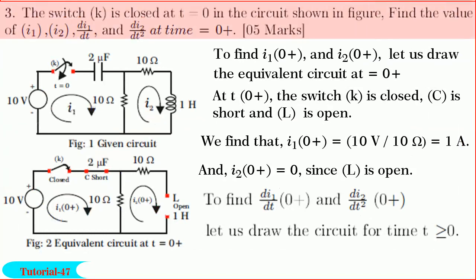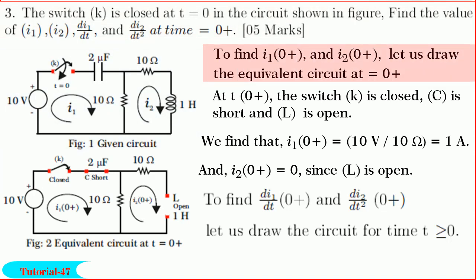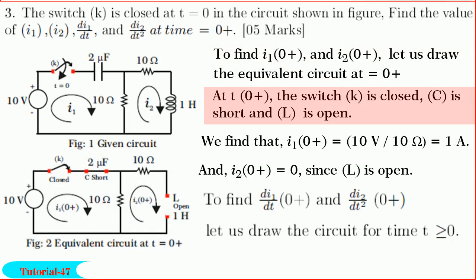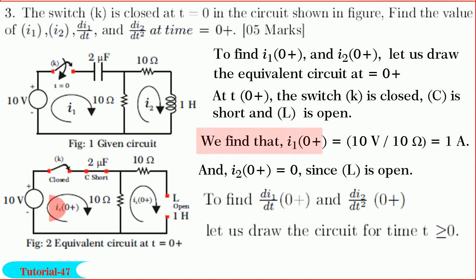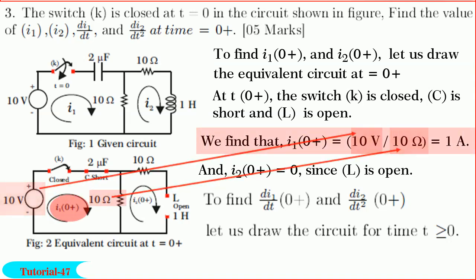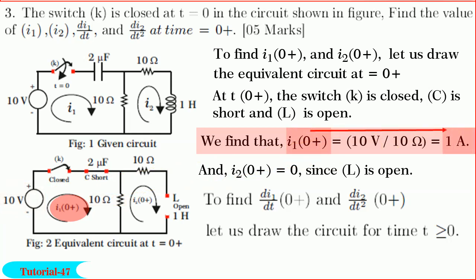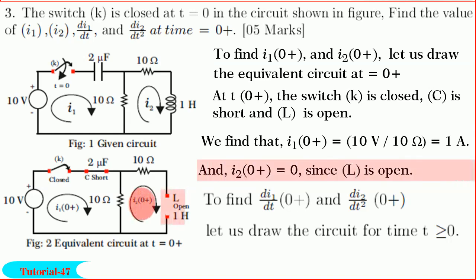Friends, next we shall solve a very easy problem on transient analysis. In this question, we are required to find i1(0+), i2(0+), di1/dt(0+), and di2/dt(0+) in the circuit shown in figure. To find i1(0+) and i2(0+), let us draw the equivalent circuit at time t equal to 0+. We know at t equal to 0+, the switch k is closed, C is short and L is open as shown in figure. From the figure, we find that i1(0+) is equal to 10 volts divided by 10 ohms, which gives us i1(0+) equal to 1 ampere.